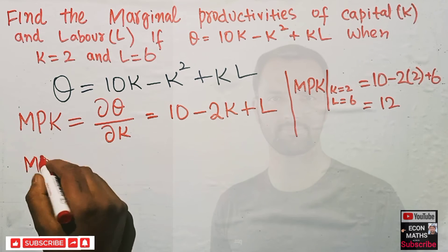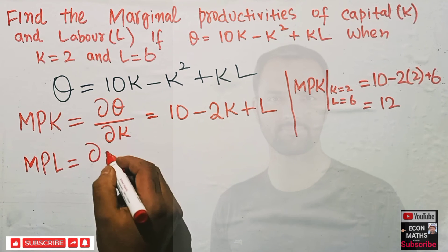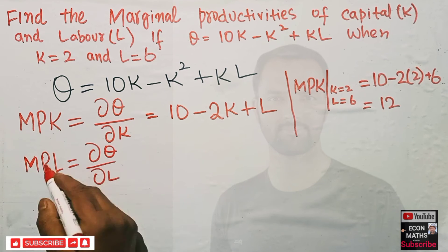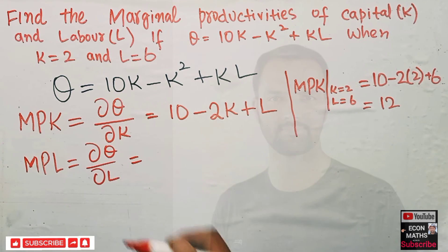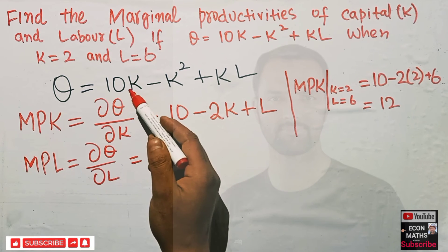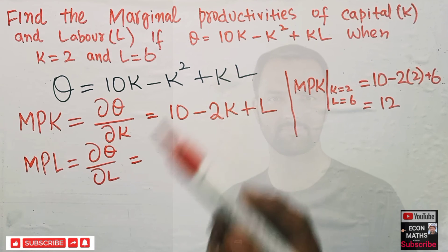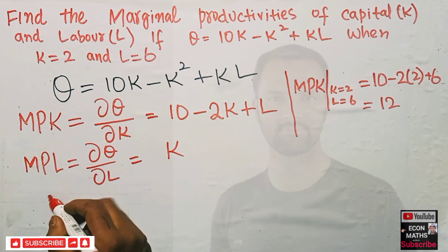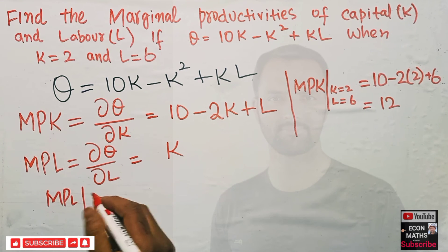Now, what is the marginal productivity of labor? We take the partial derivative of the production function with respect to L. Since no L is involved in the first term (10K) or the second term (K²), we are left with the third term KL. The derivative of L is 1, so we get MPL = K.